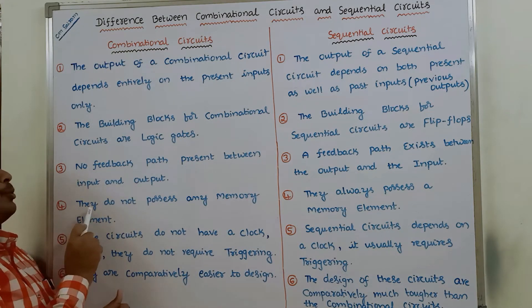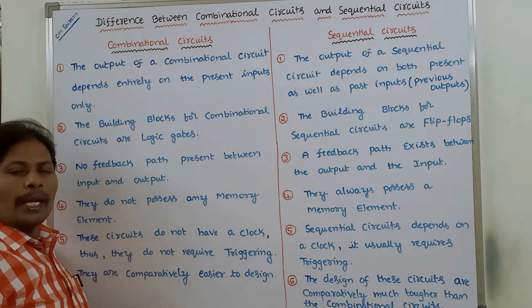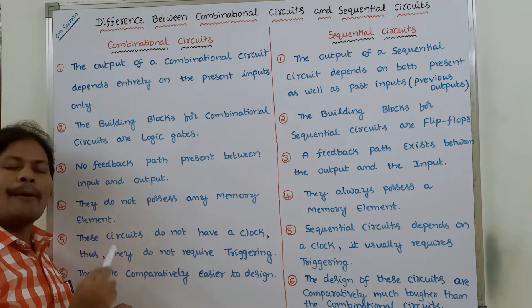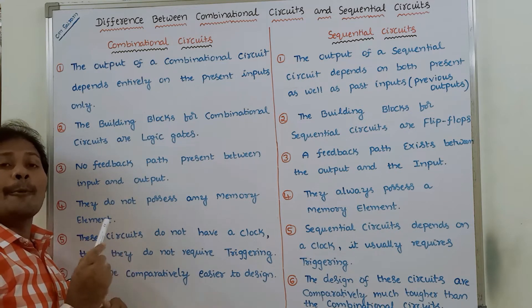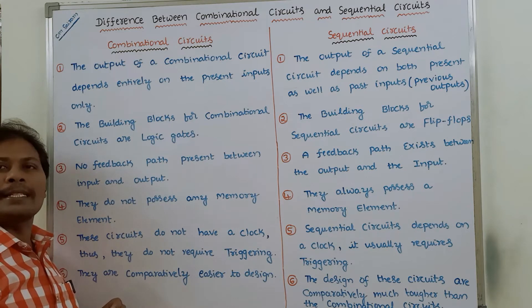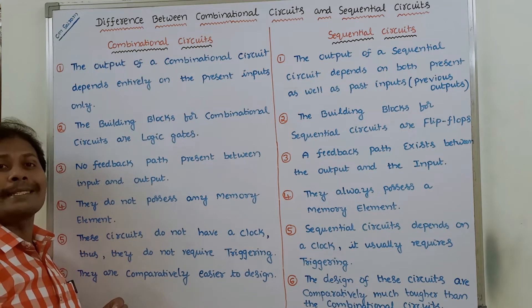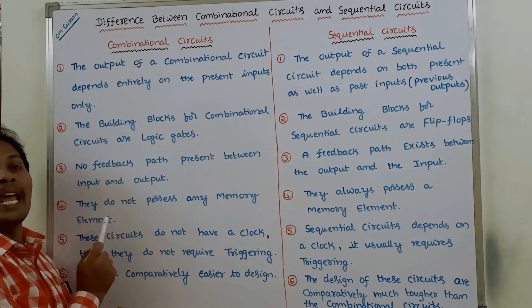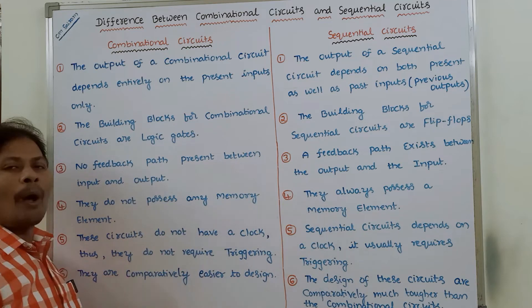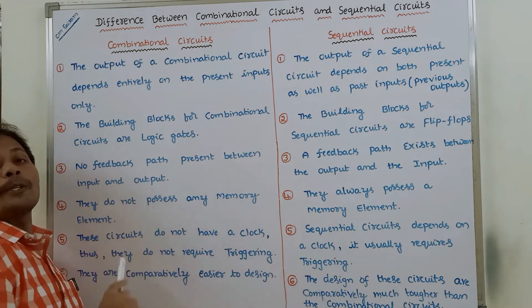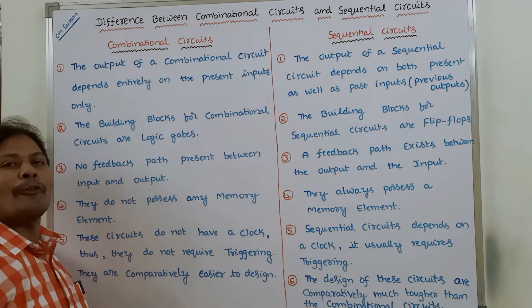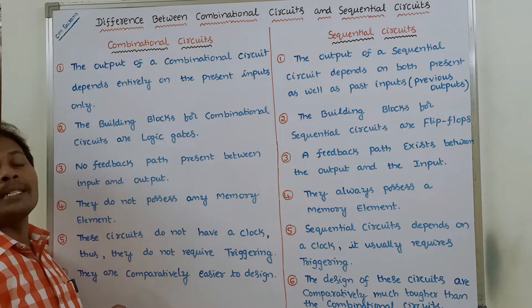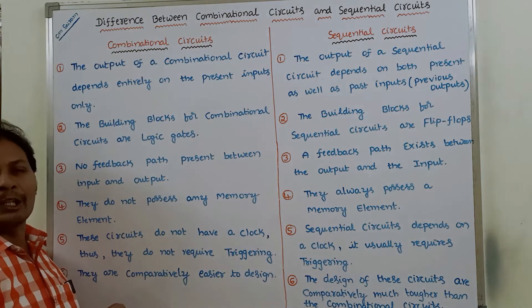Fourth point: combinational circuits do not possess any memory element. The output depends only on the present inputs, and because of that reason, the combinational circuit does not store any state. Therefore, there is no requirement of any memory element in combinational circuits. Whereas in the case of sequential circuits, they always possess a memory element. Memory elements are used for storing the previous outputs of sequential circuits.